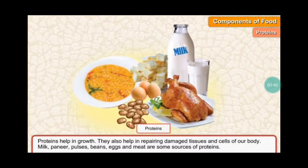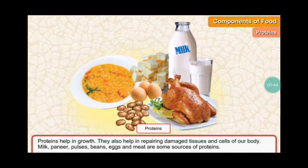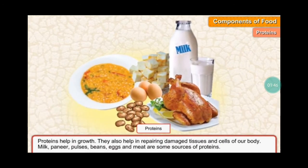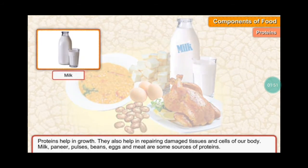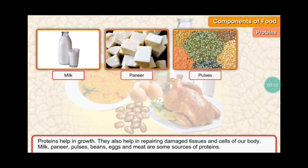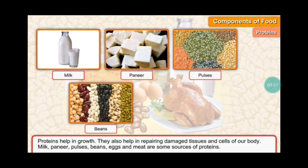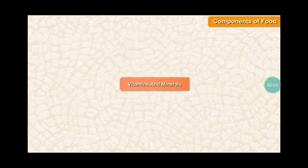Proteins help in growth. They also help in repairing damaged tissues and cells of our body. Milk, paneer, pulses, beans, eggs, and meat are some sources of proteins.